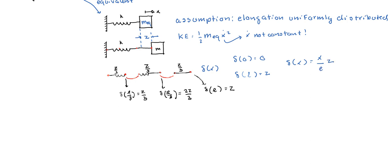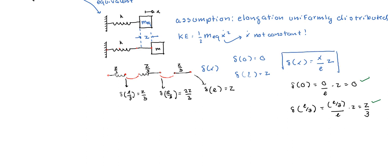Let's verify: displacement at 0 equals (0/L)·z = 0 — good. Displacement at L/3 equals (L/3)/L · z = z/3 — also good. So we do have a displacement function. We want that because if we take its derivative, that gives us the velocity of a particle at a point along the spring.